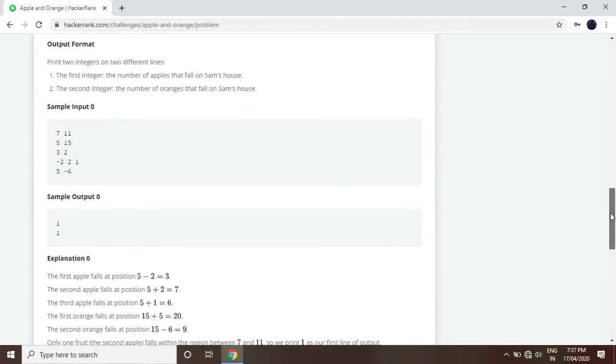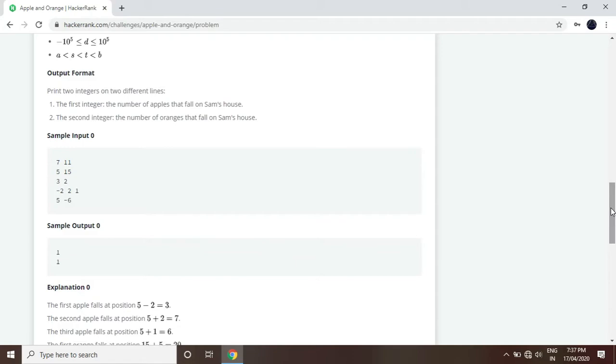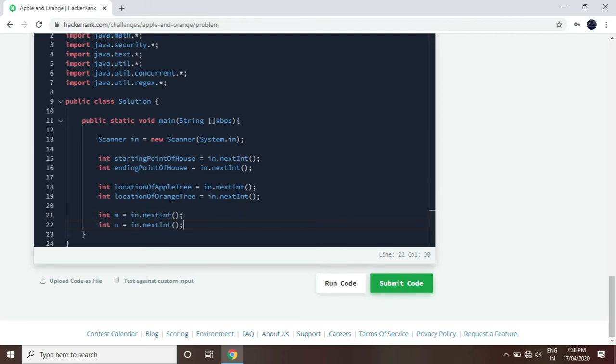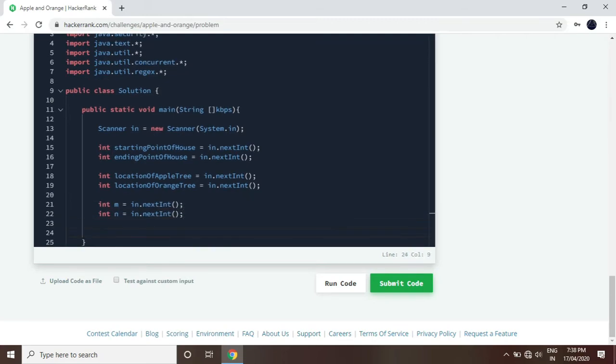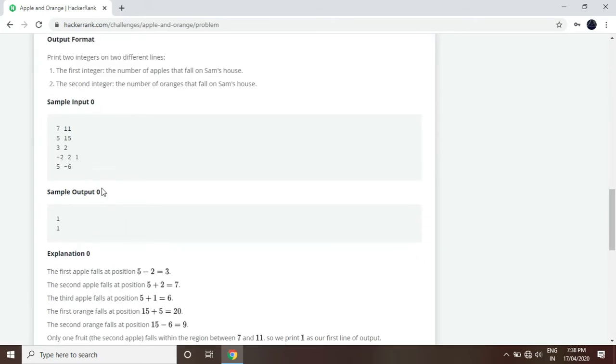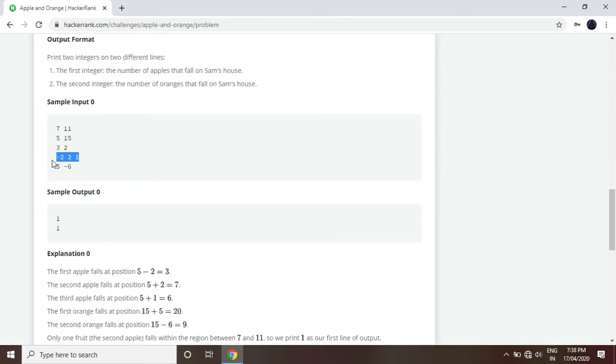Now we have two inputs, now the third input is M and N. Here we have M and N. Now the array will be made, in which we have the values, these values we can store.